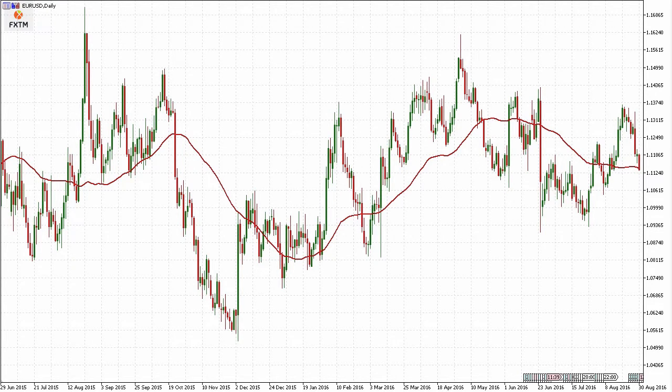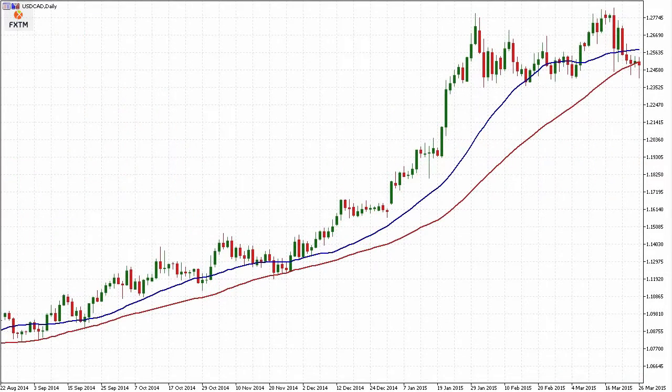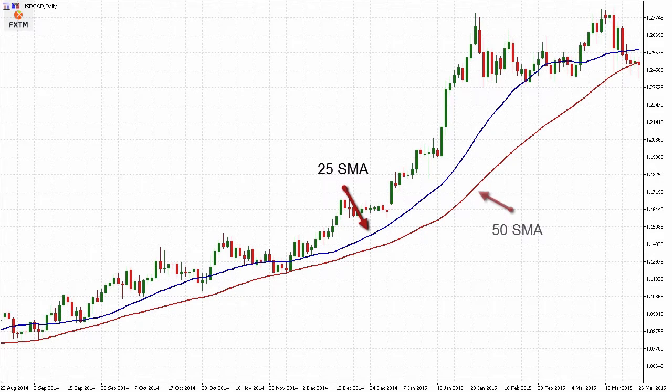Now, one of the ways that we deal with this particular problem is that we'll add moving averages together, a short one with a long one. Here, I've applied a 25-period simple moving average with a 50-period simple moving average. What we're looking for on this chart is to identify a time where we have the short period moving average above the long period moving average, which is confirming a bullish trend.